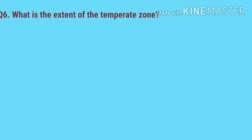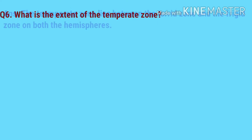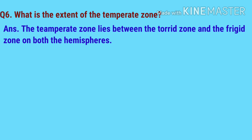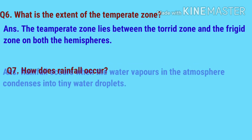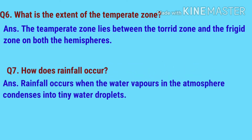Question number six: what is the extent of the temperate zone? The temperate zone lies between the torrid zone and the frigid zone on both hemispheres. Question number seven: how does rainfall occur? Rainfall occurs when the water vapors in the atmosphere condense into tiny water droplets.